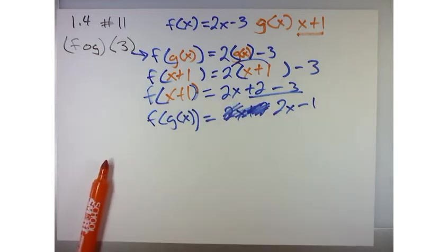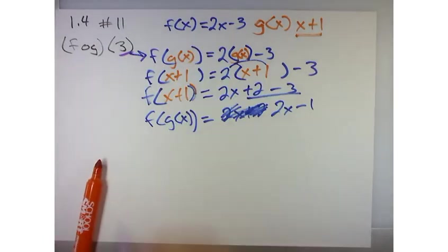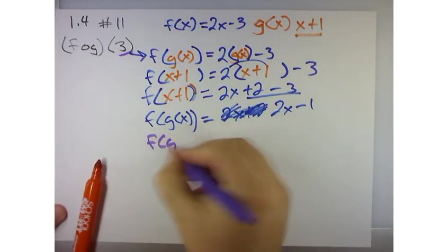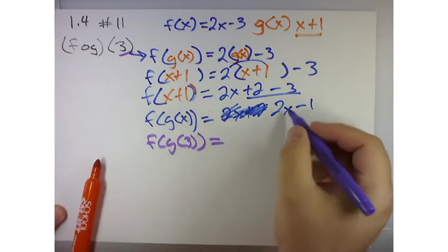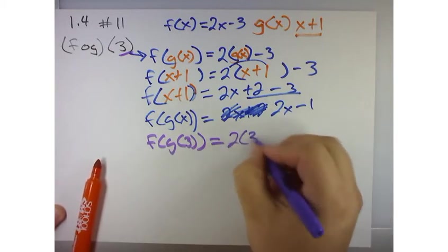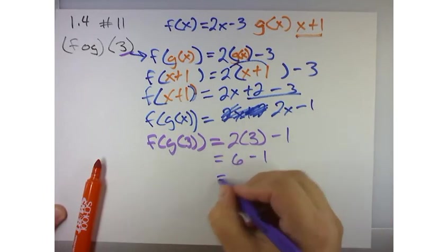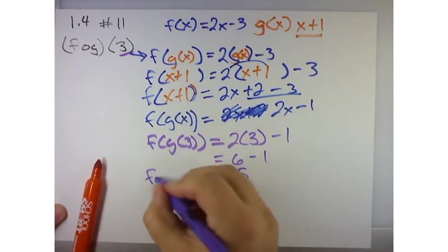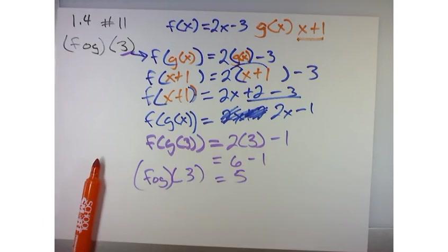But what they want us to do is evaluate this at 3. So we need f of g of 3. Now wherever there's an x, I simply plug in a 3. So f of g evaluated at 3 equals 5. And that's it, that's all you have to do.